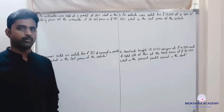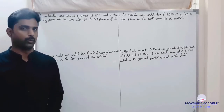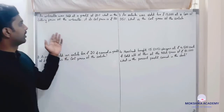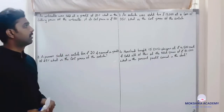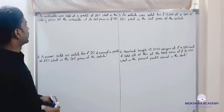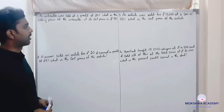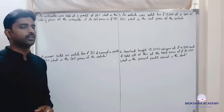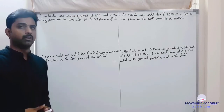Students, let us solve some problems regarding profit and loss. The first question: an umbrella was sold at a profit of 20 percent. What is the selling price of the umbrella if its cost price is rupees 180?